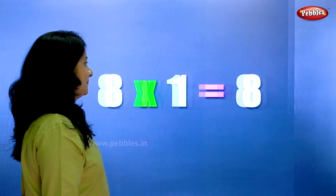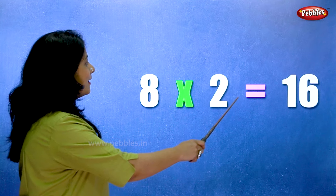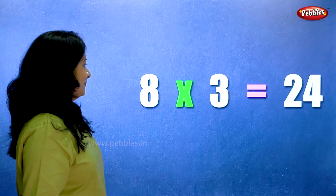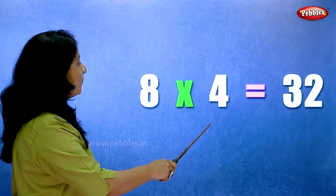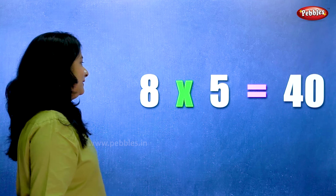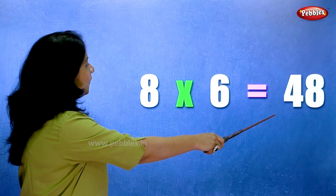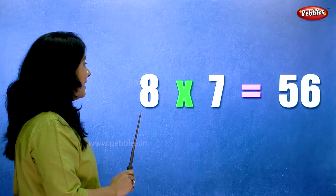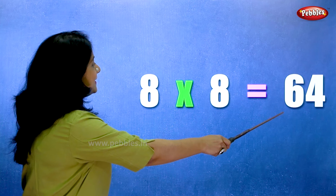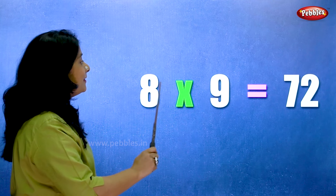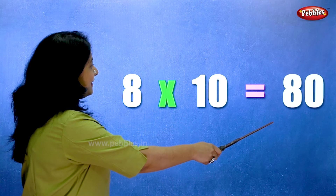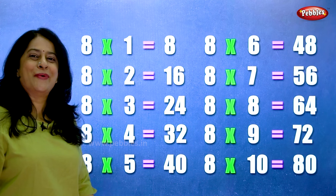Eight ones are eight. Eight twos are sixteen. Eight threes are twenty-four. Eight fours are thirty-two. Eight fives are forty. Eight sixes are forty-eight. Eight sevens are fifty-six. Eight eights are sixty-four. Eight nines are seventy-two. Eight tens are eighty.